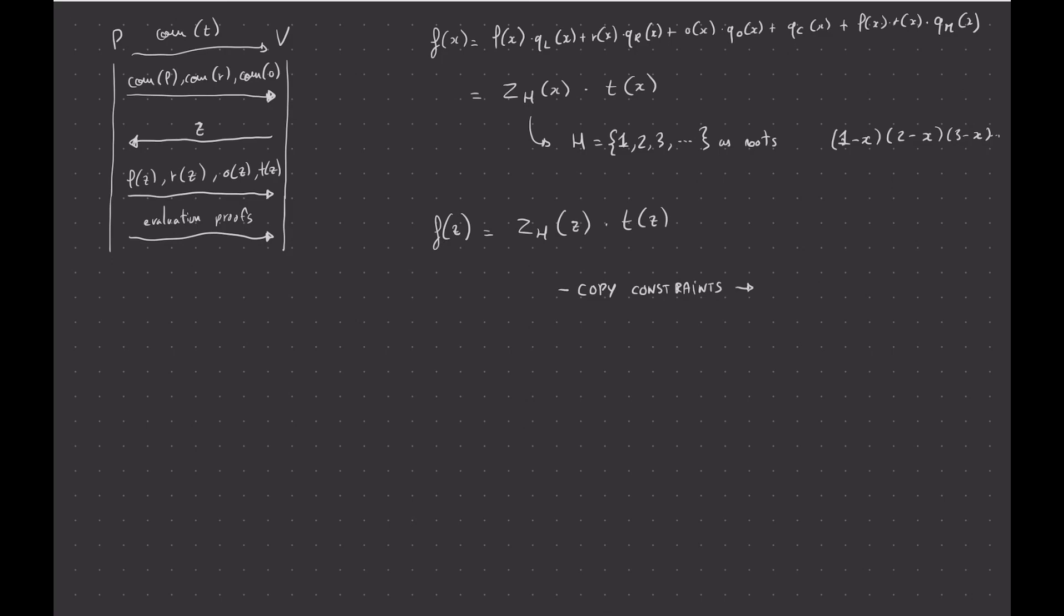This is solved by the permutation arguments, which is basically another proof that we need to send. So we need to send another proof. I haven't talked about zero-knowledge nest that much. And basically, because we're sending evaluation of these polynomials, we're kind of leaking things. And so we need to blind these polynomials before sending the evaluations. So that's something I need to explain.